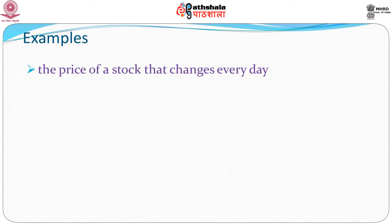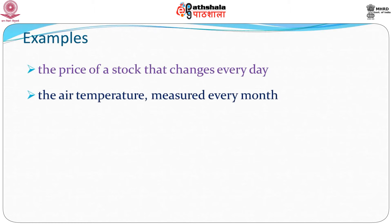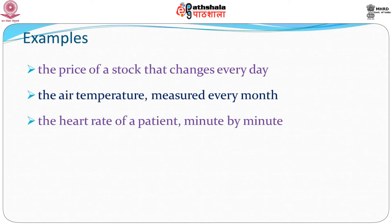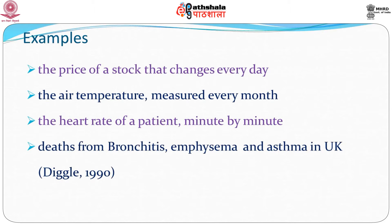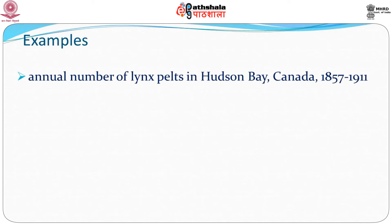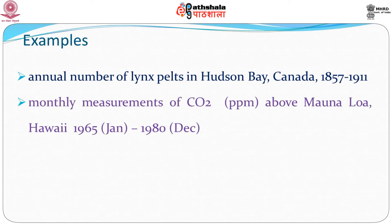Examples include the price of a stock that changes every day, the air temperature measured every month, the heart rate of a patient taken minute by minute, deaths from bronchitis, emphysema and asthma in the UK — data provided by Diggle in his 1990 book. Several other examples are the annual number of lynx pelts in Hudson Bay, Canada between 1857 and 1911, and the monthly measures of CO2 above Mauna Loa in Hawaii between 1965 and 1980.